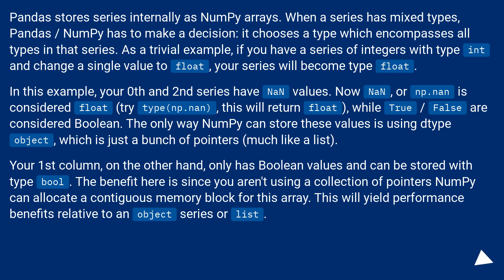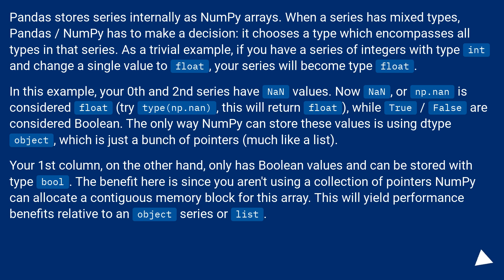In this example, your zeroth and second series have NaN values. Now NaN, or np.nan, is considered float — try type(np.nan), this will return float — while True and False are considered boolean. The only way numpy can store these values is using dtype object, which is just a bunch of pointers, much like a list. Your first column, on the other hand, only has boolean values and can be stored with type bool.